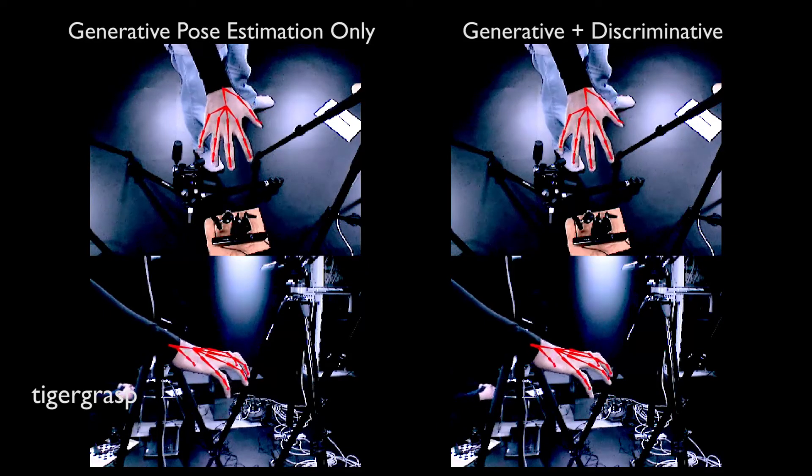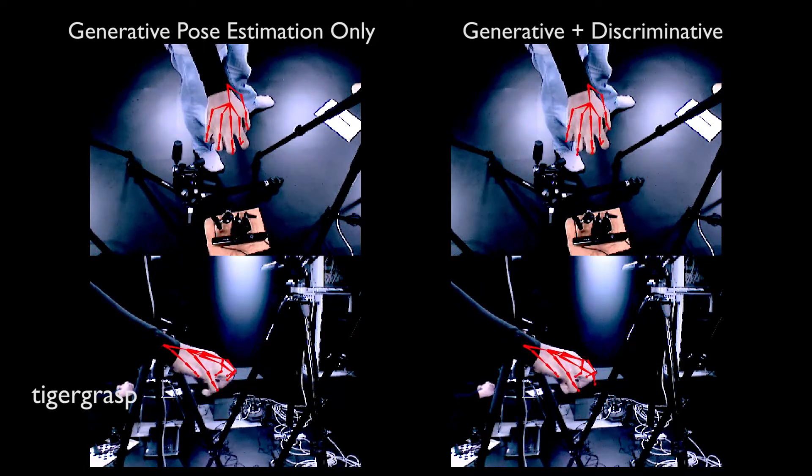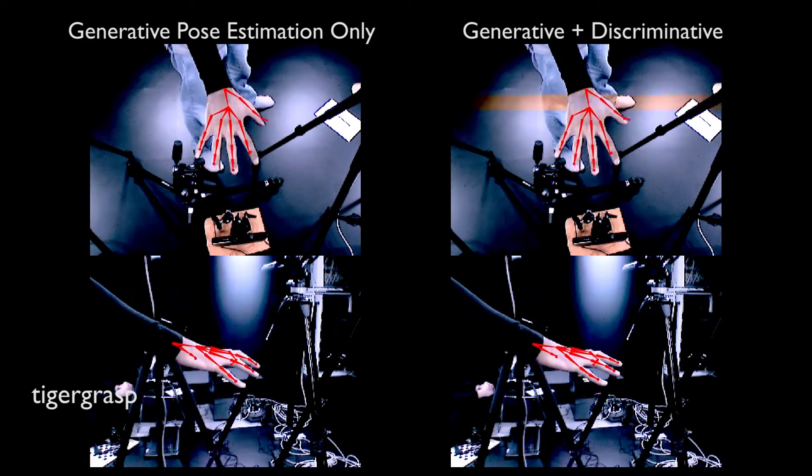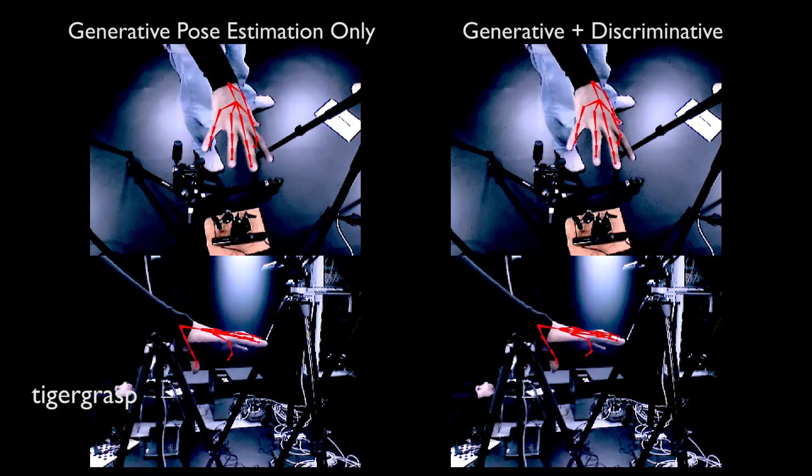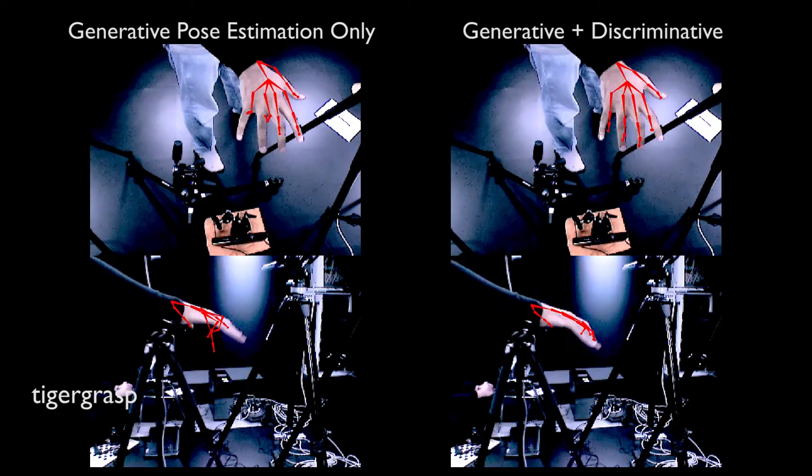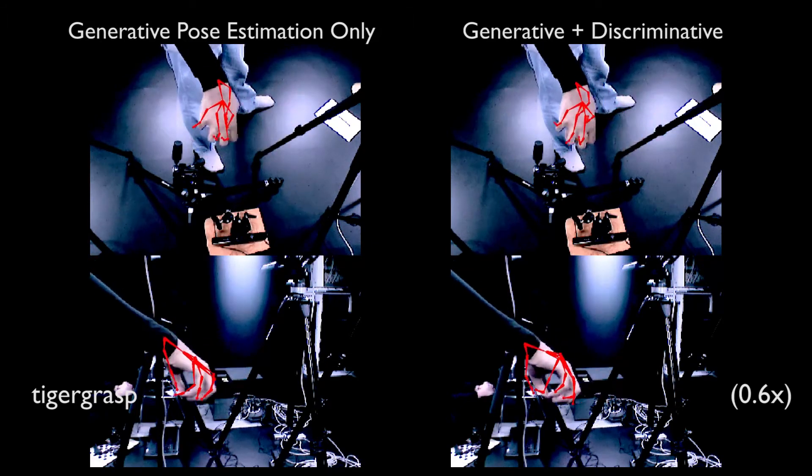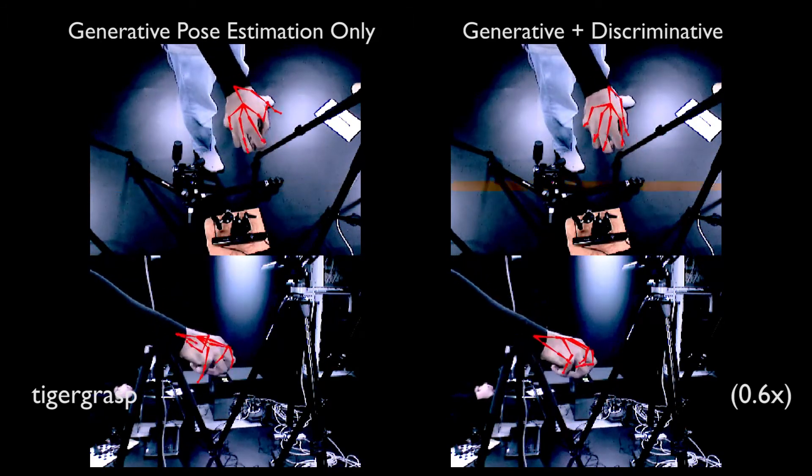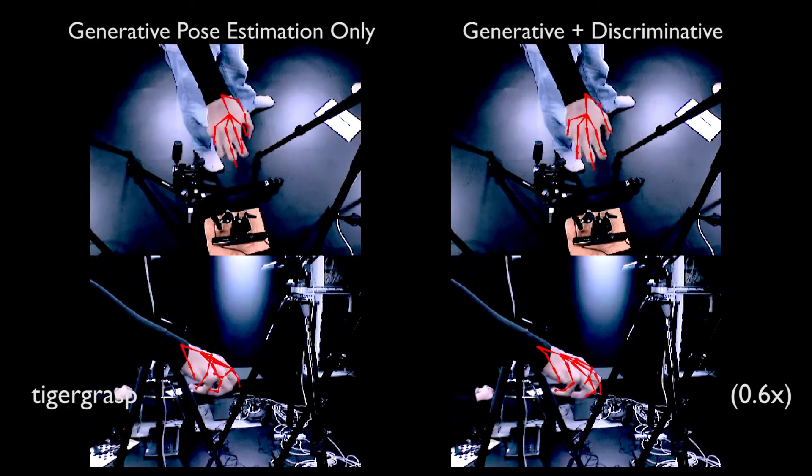In this sequence, we compare our combined results with using only generative pose estimation. When pose estimation fails under fast motions, our approach recovers, while generative pose estimation does not. Our approach continues to recover throughout this sequence, while generative pose estimation drifts.